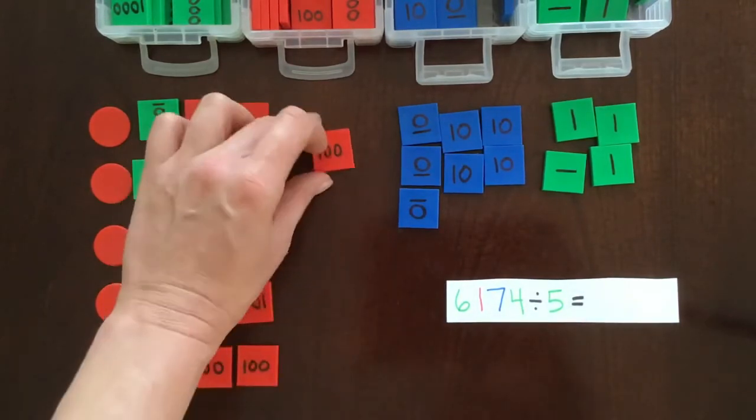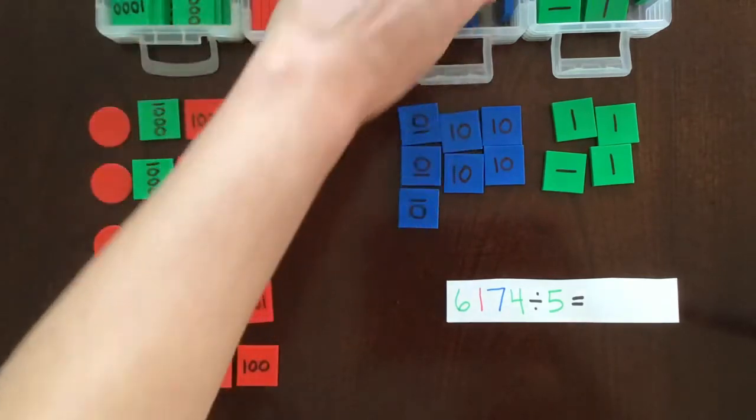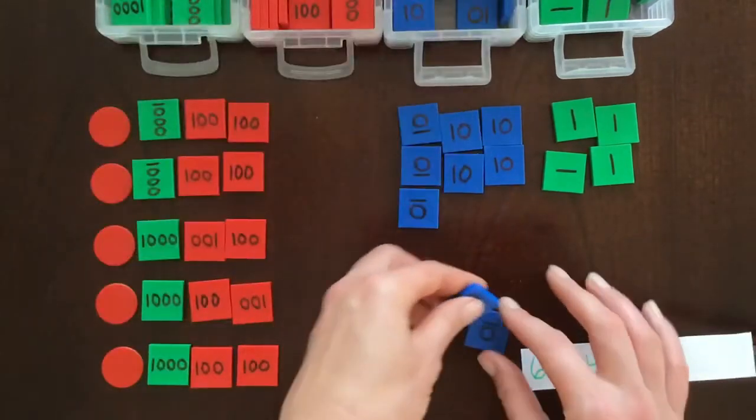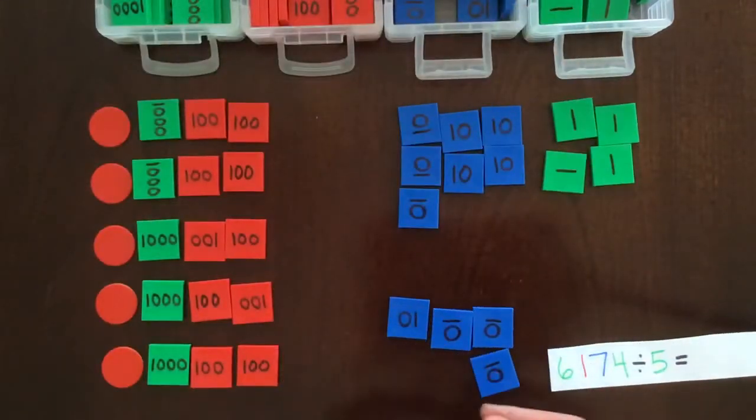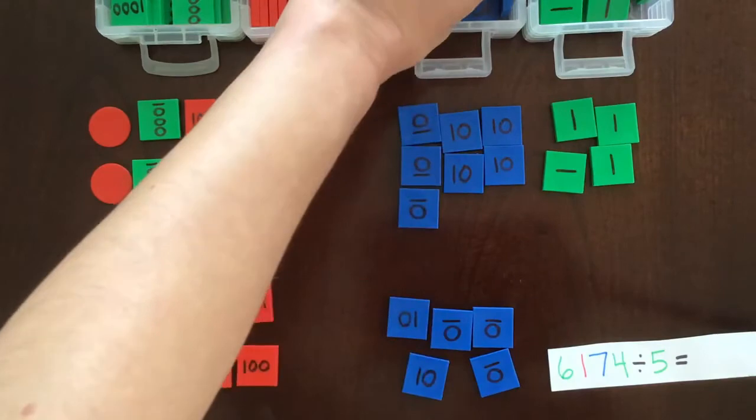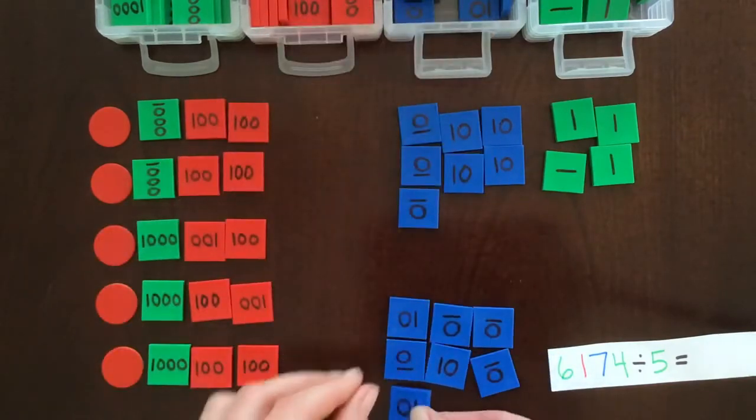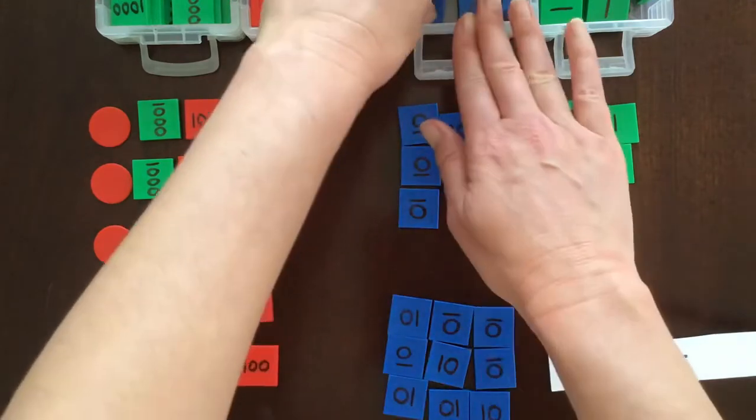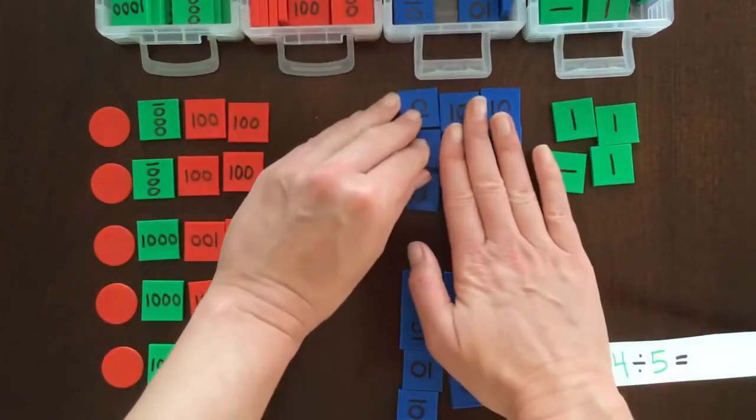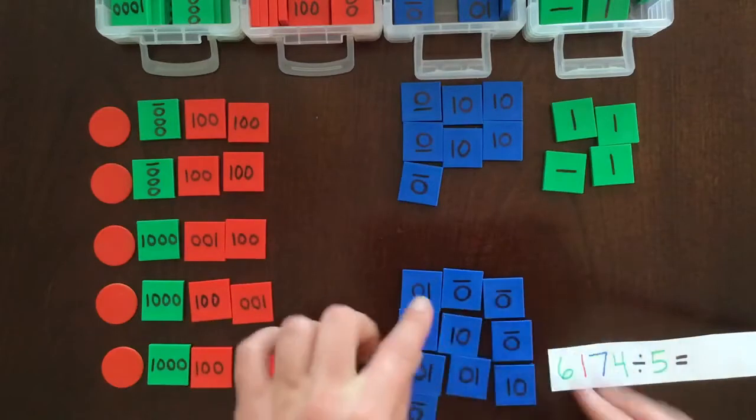So we need to exchange 100 for 10 tens. 1, 2, 3, 4, 5, 6, 7, 8, 9, and 10. And I keep it separate again to make sure they don't get mixed up with what we already had.